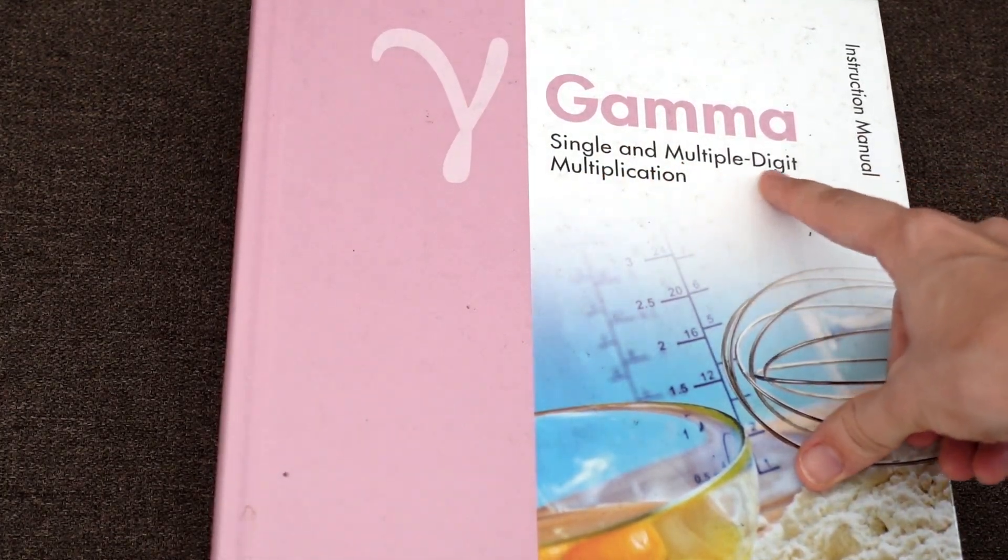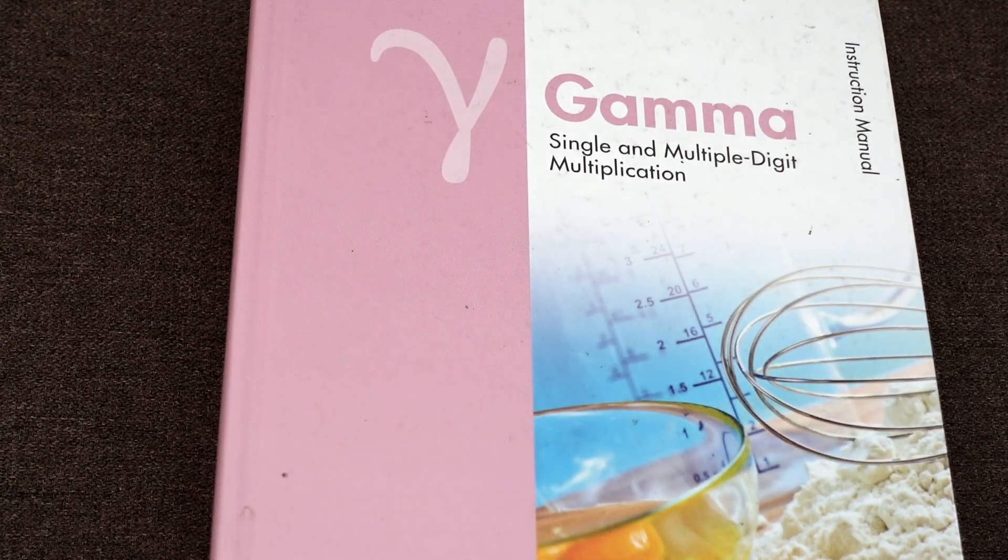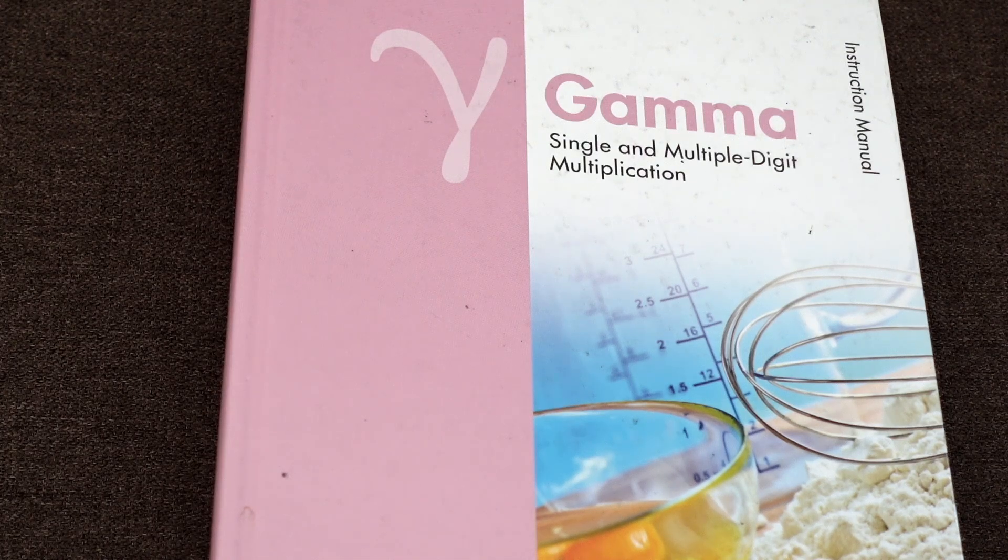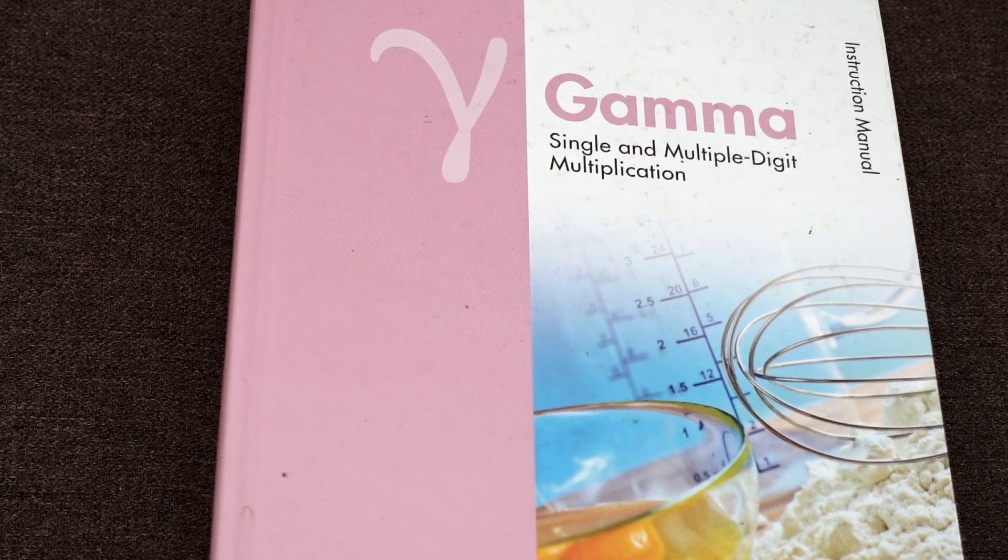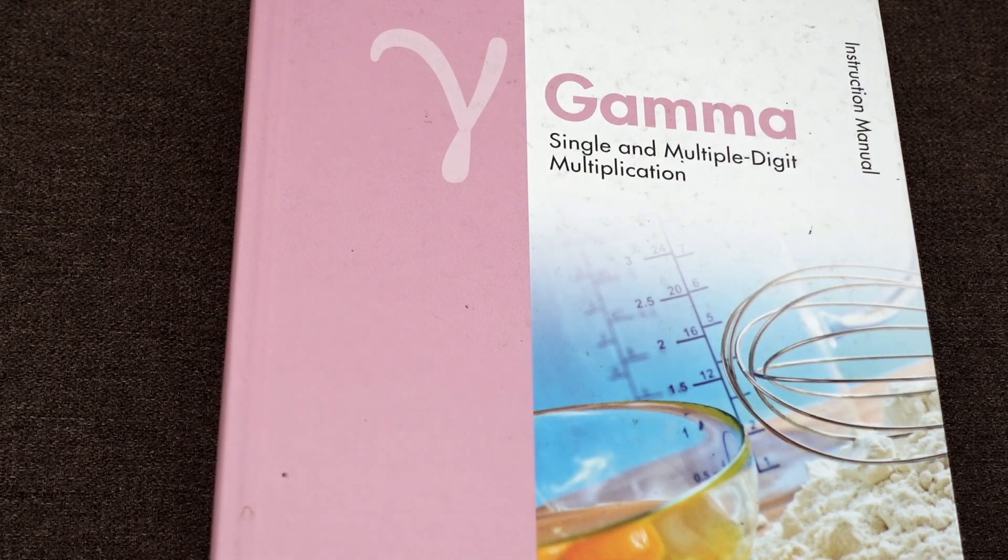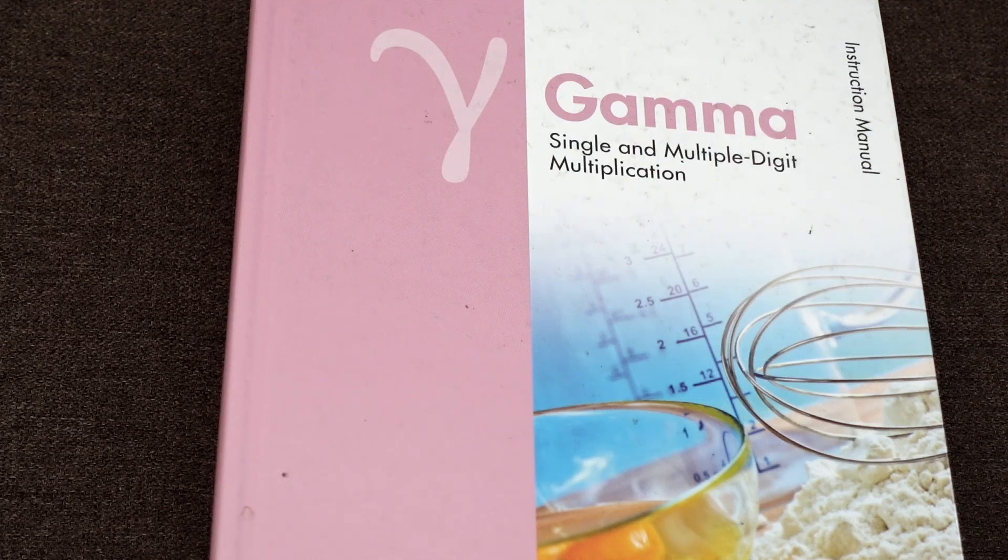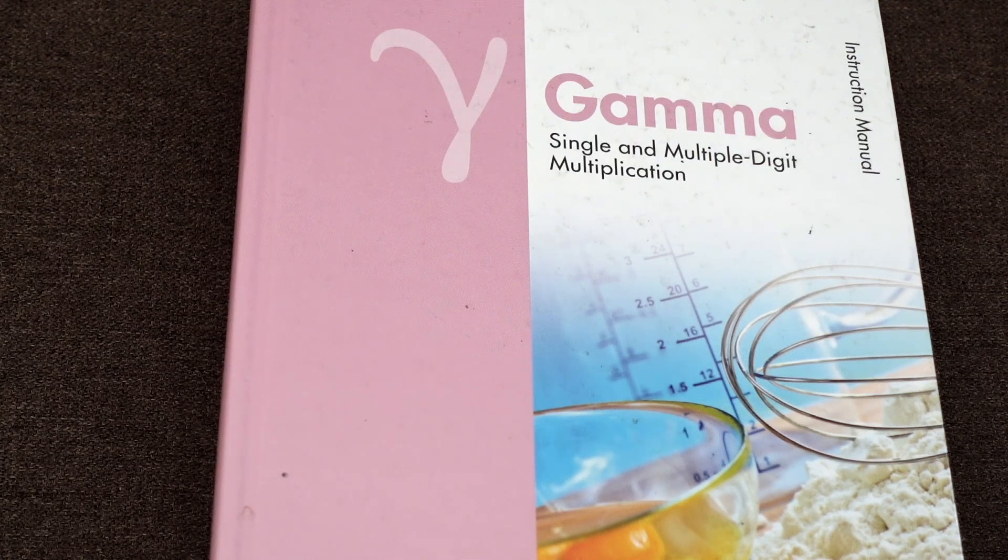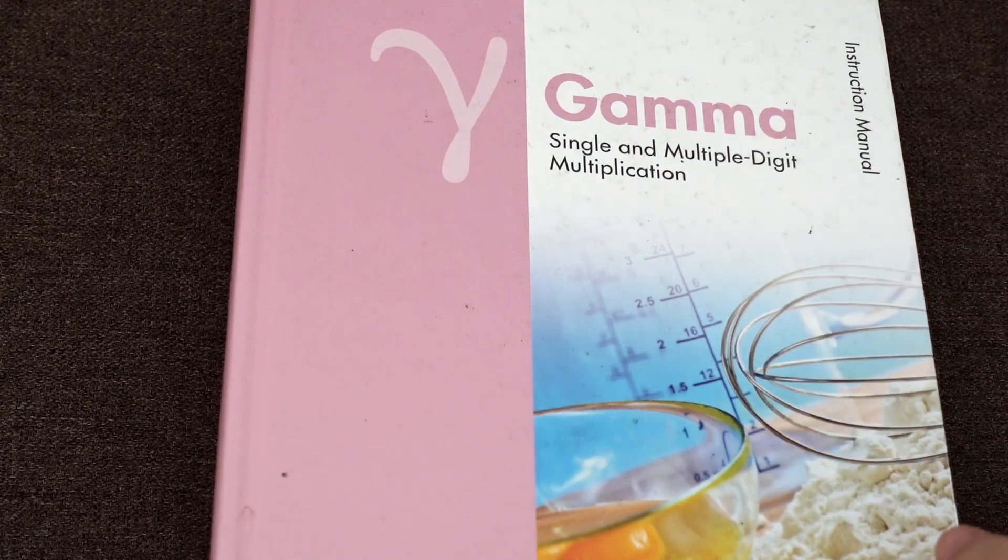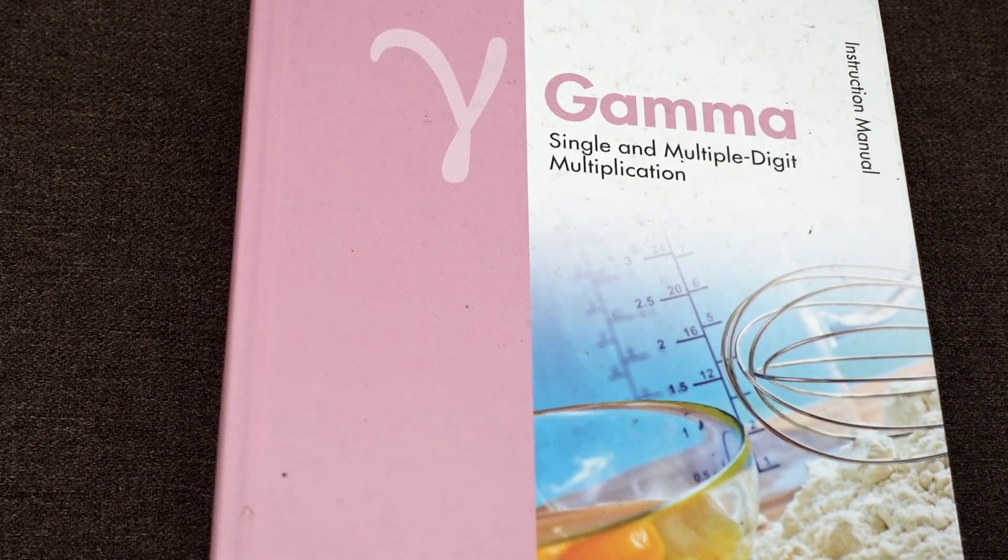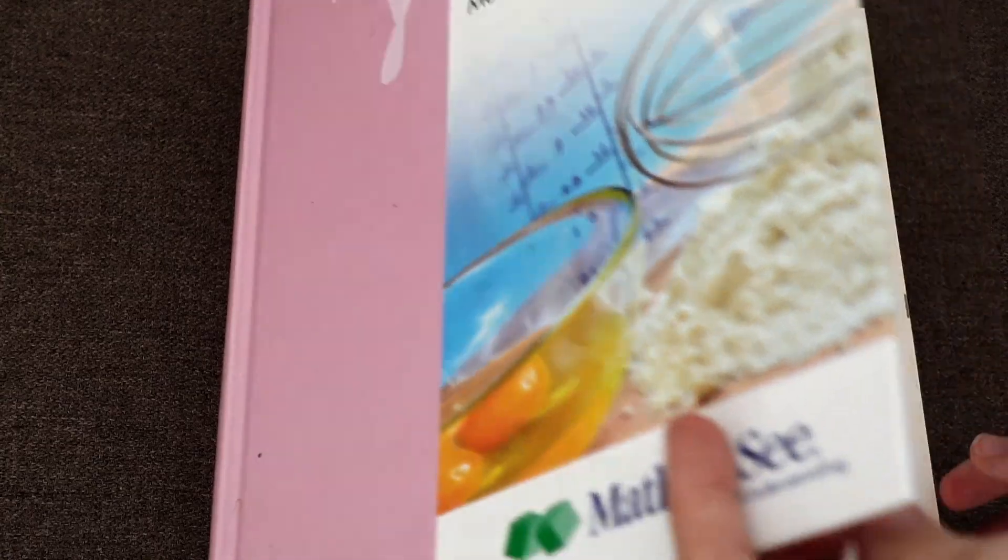Gamma focuses on single and multiple digit multiplication. Now, there can be a bit of a misconception that that means all you are doing throughout the entire year of math is just multiplication. That is not true, and when you look at the student book, you're going to see that's not the only thing you're doing. There is review of addition and subtraction. There is a little bit of work with fractions. There is other things going on in this, but multiplication is the key focus for this year of math.